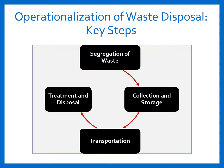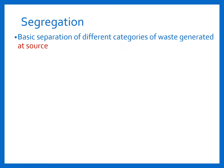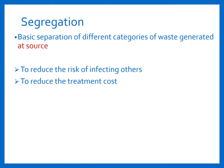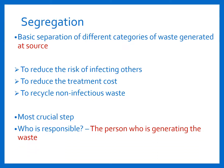Let's now see the individual steps. The first one is segregation — it is basically the basic separation of different categories of waste generated at source. Why do we need to segregate the waste at source? Primarily to reduce the risk of infecting others, to reduce the treatment cost, and to reduce the recycling of non-infectious waste. This is the most crucial step, and the person who is generating the waste is responsible for it.